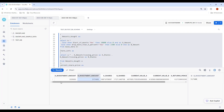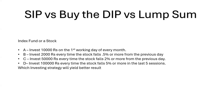Two additional investors are introduced as a challenge. Investor C invests 50,000 rupees every time the stock falls 2 percent or more from the previous day. Investor D invests 1,00,000 rupees every time the stock falls 5 percent or more — but D looks at the cumulative fall over the last five sessions rather than just the previous day. Viewers are challenged to solve which strategy yields the best result and post their answers in the comments.